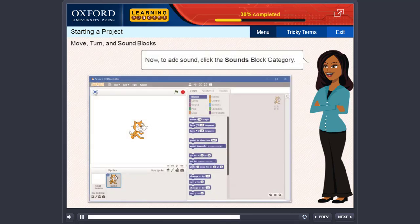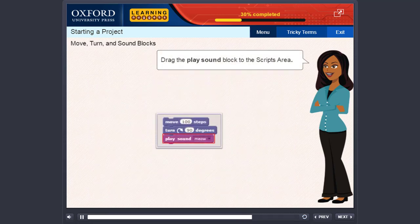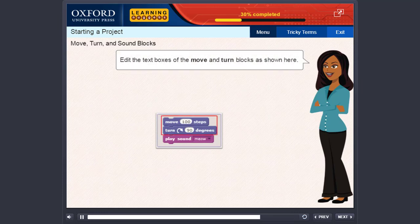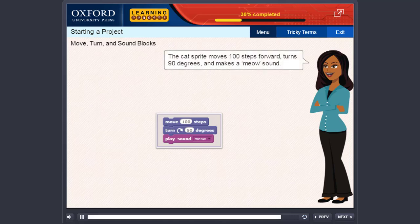Now, to add sound, click the Sounds block category. Drag the Play Sound block to the Scripts area. Edit the text boxes of the move and turn blocks as shown here. Run the program by clicking anywhere on the stack of blocks in the Scripts area. The cat sprite moves 100 steps forward, turns 90 degrees, and makes a meow sound.